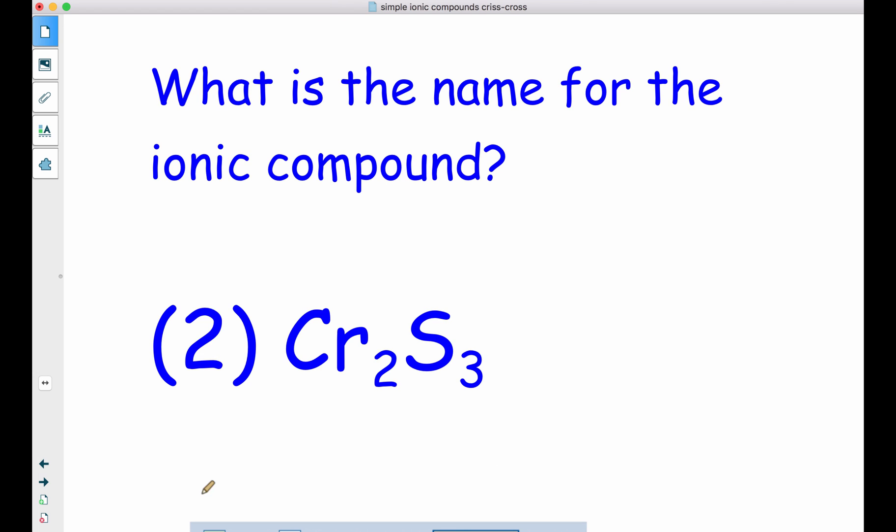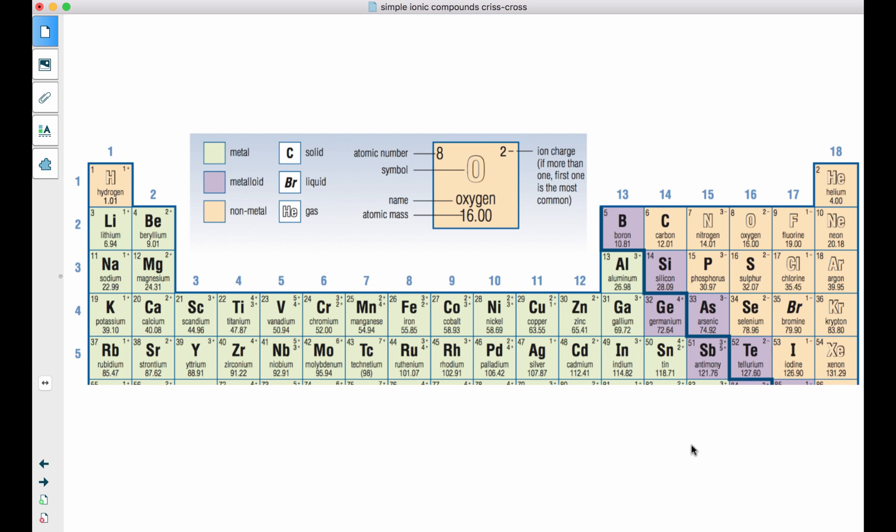So what is the name for the ionic compound? In this case, we've got Cr, which is chromium, and S, which is sulfur. Chromium is right here. It could be a 3+ or a 2+. Sulfur is a 2-.